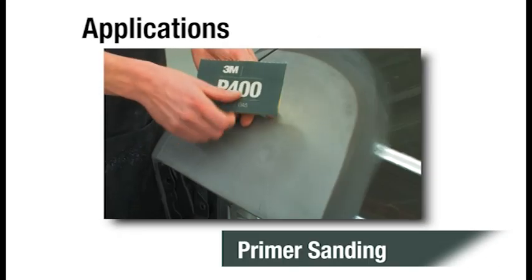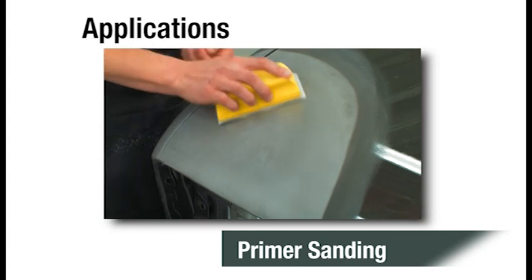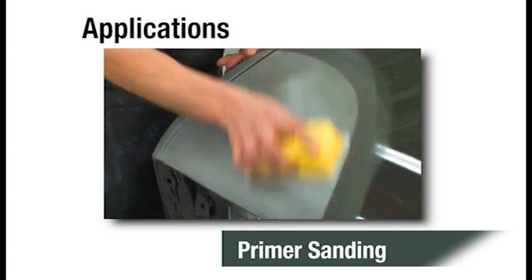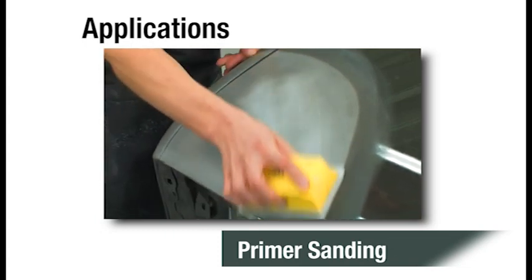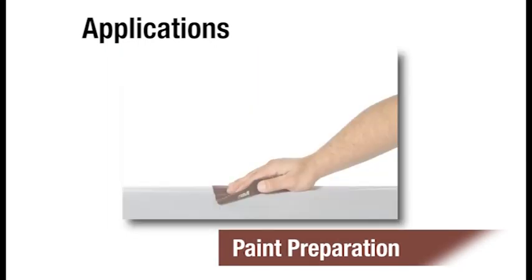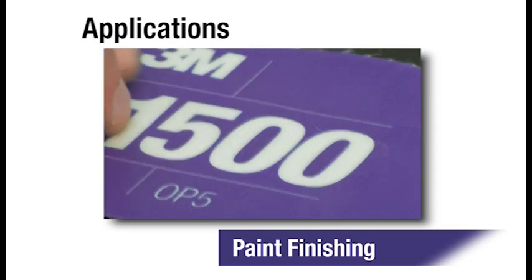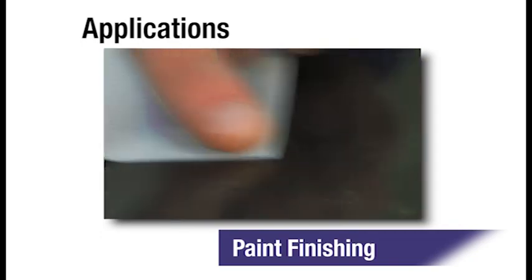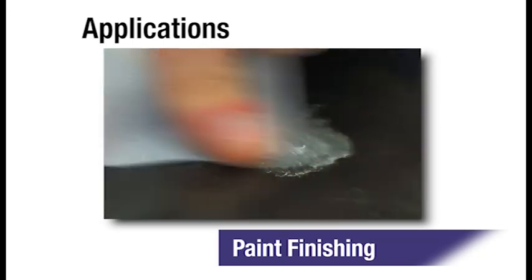Available in P400 and P600 for primer sanding and P800 and P1000 for scuffing behind panels and edges, this product will help increase the production and quality during the prepping stage of the repair. The product is also available in P1200 and P1500 for removing paint defects in the detail edge of the repair.